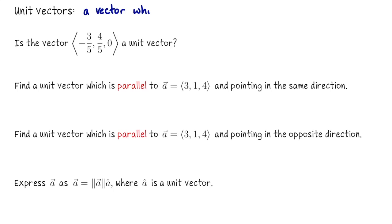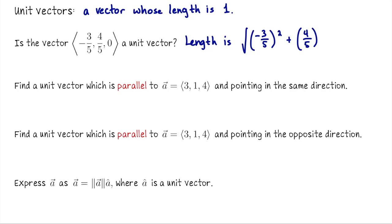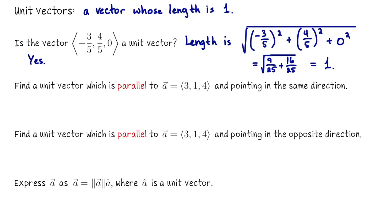We are often interested in describing directions with a vector whose length is 1. Such a vector is called a unit vector. These vectors arise in different contexts — the idea is that we want to indicate direction without having the vector's length affect our calculations. Unit vectors give us a standardized way to indicate direction. Let's check whether the vector negative 3/5, 4/5, 0 is a unit vector. Computing its length: the square root of negative 3/5 squared plus 4/5 squared plus 0 squared equals the square root of 9/25 plus 16/25 equals the square root of 25/25, which is 1. Yes, that is a unit vector.